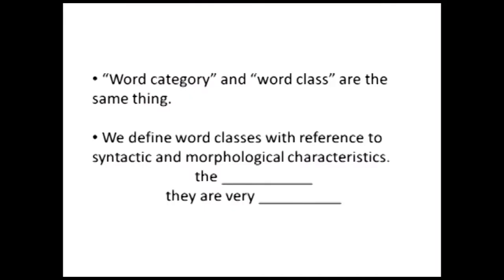First let's talk about category. Word category and word class are exactly the same thing, so don't let that non-difference trip you up. We define the word classes or categories with reference to the syntactic and morphological characteristics of the class. This is different from the way you're used to thinking about them — you're probably used to thinking about them in terms of their semantic characteristics. For example, you're used to thinking that a verb is something that expresses an action. That's about meaning, and meaning is semantics. A syntactic or morphological characteristic of a verb would be that it can take a past tense ending.